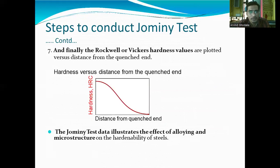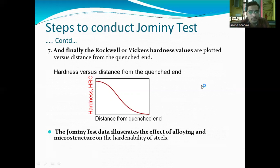The Rockwell or Vickers hardness values are plotted versus distance from the quench end. On the graph, the x-axis shows distance from the quench end and the y-axis shows hardness (HRC). At the quench end, hardness is higher; it reduces as you move away from the quench end, with minimum hardness at the collar end. This is called the hardenability curve for steel. The Jomini end test data illustrates the effect of alloying and microstructure on the hardenability of steel.